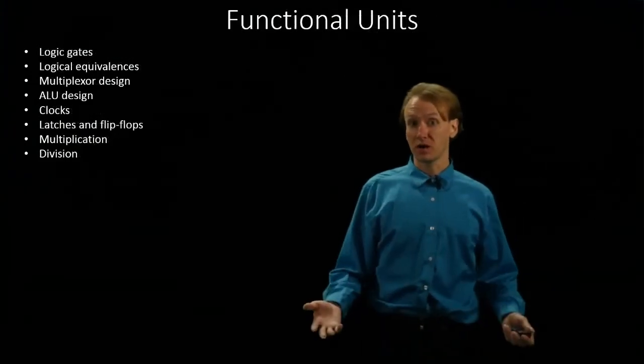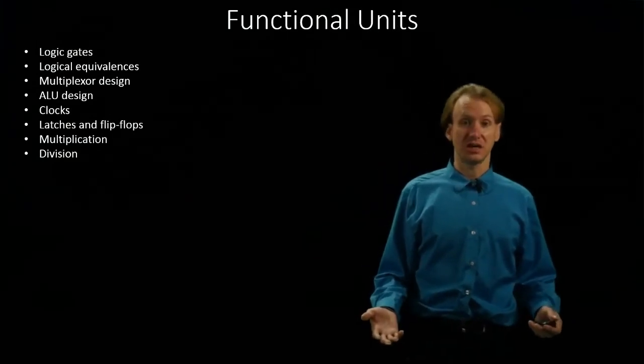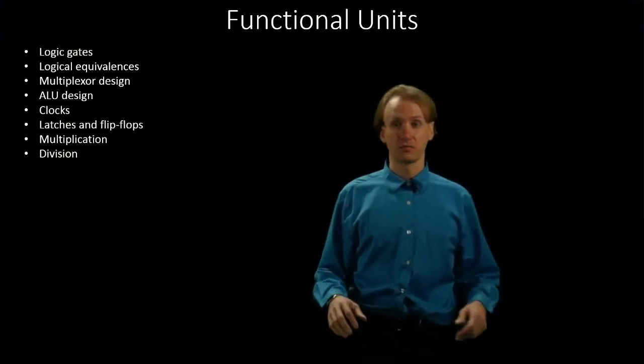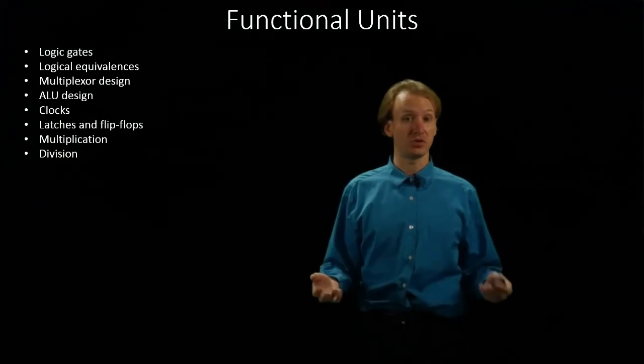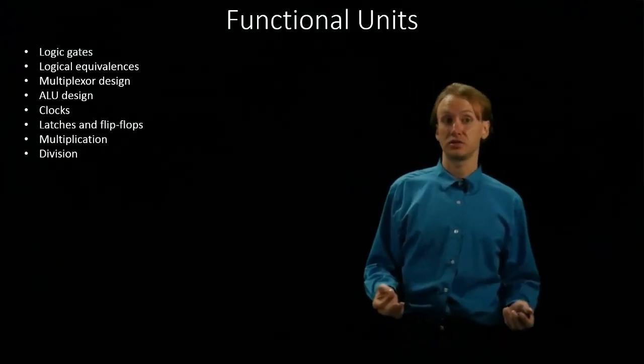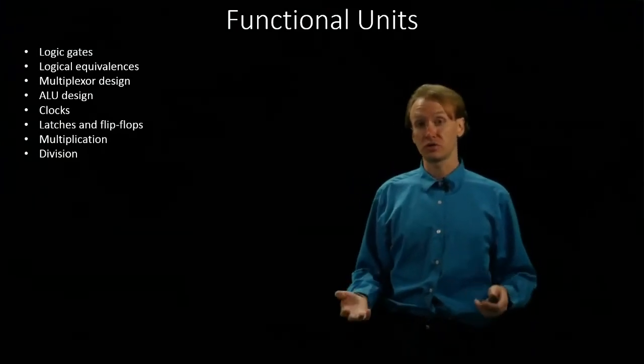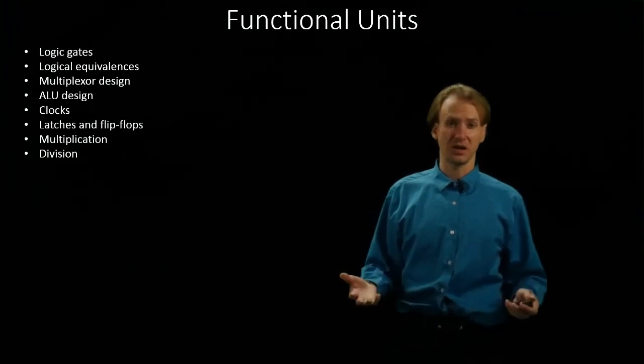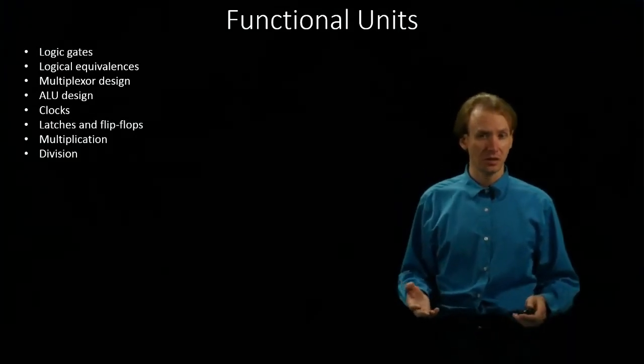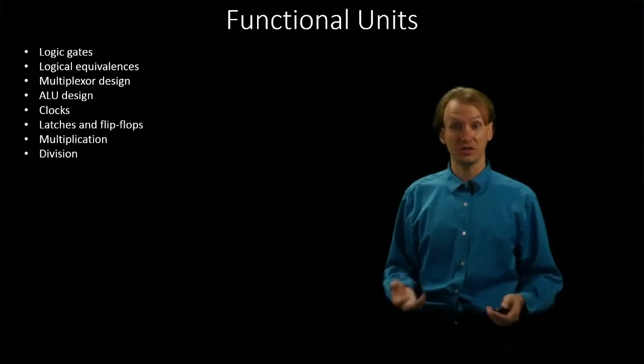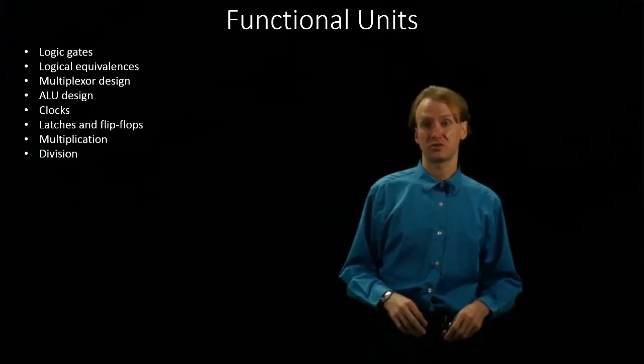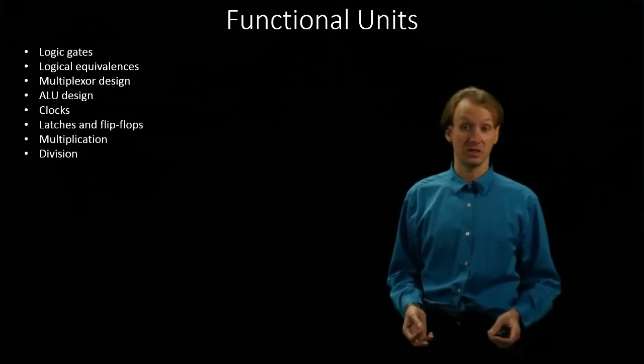Building up from the bottom, we'll review logic gates and the standard logical equivalences. From there we'll begin by building a 1-bit multiplexer, then extending it to 32 bits. Once we have a multiplexer, we'll use that as part of the arithmetic logic unit that we build. The bulk of the ALU will be simple logic gates, but we'll use the multiplexer to select the information that we're interested in.